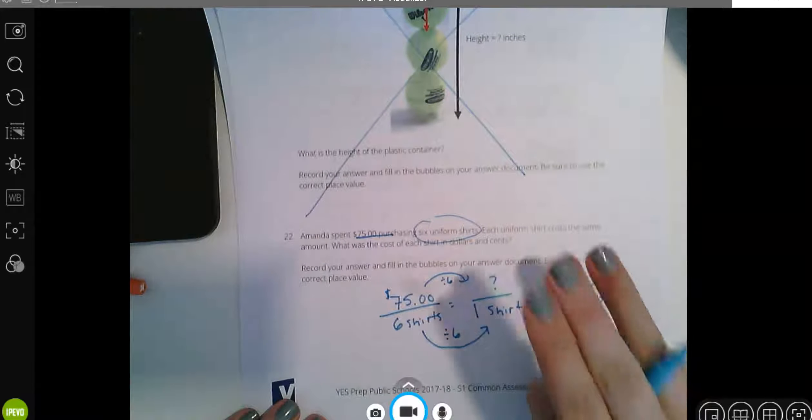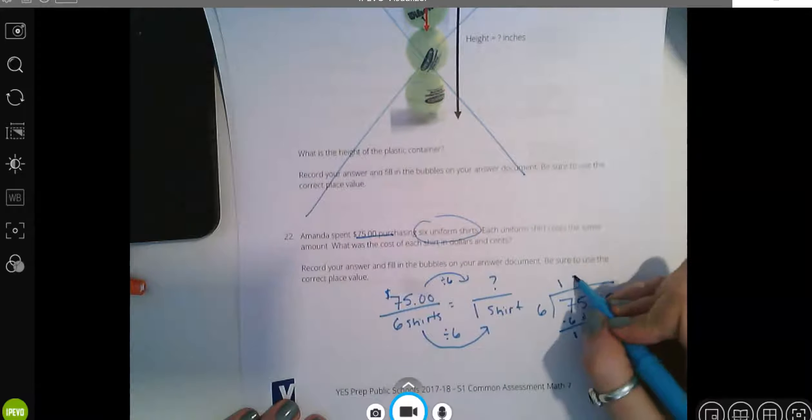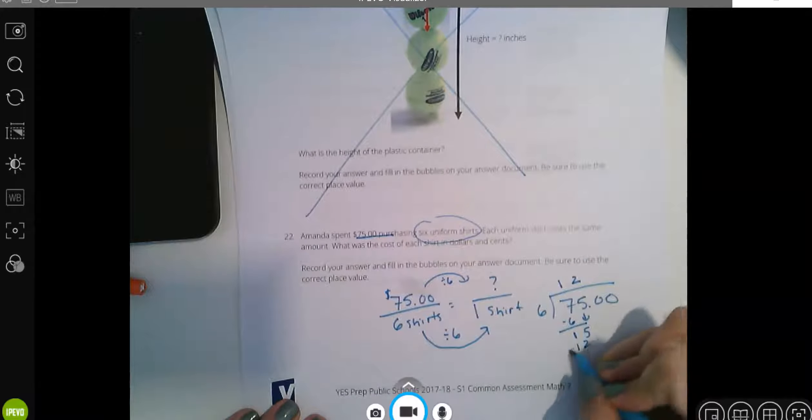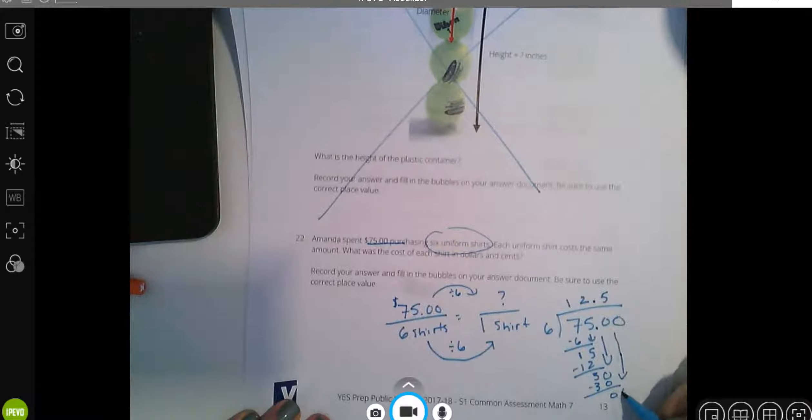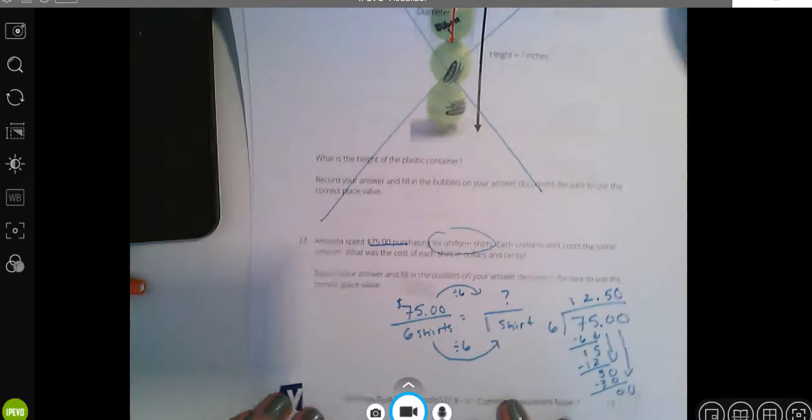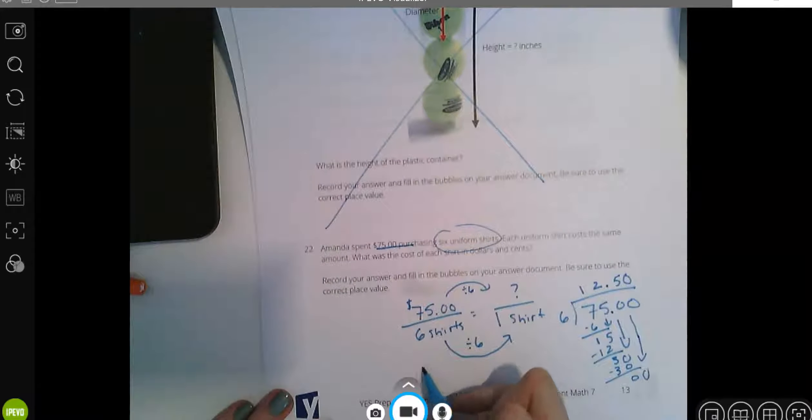Six goes into 15, two times. Remainder of three. Bring down my zero. If I have a decimal in the house I'm going to raise it to the roof. Six goes into 30 five times with no remainder. You could bring down that second zero and say six goes into zero zero times.